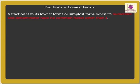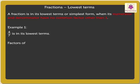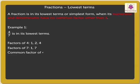Look at a few examples. Example 1: 4 upon 7 is in its lowest terms. Let us see how. First, let us find the factors of 4 and 7. Factors of 4 are 1, 2, and 4. Factors of 7 are 1 and 7. Here, the common factor of 4 and 7 is 1. Thus, we say that 4 upon 7 is in its lowest terms.